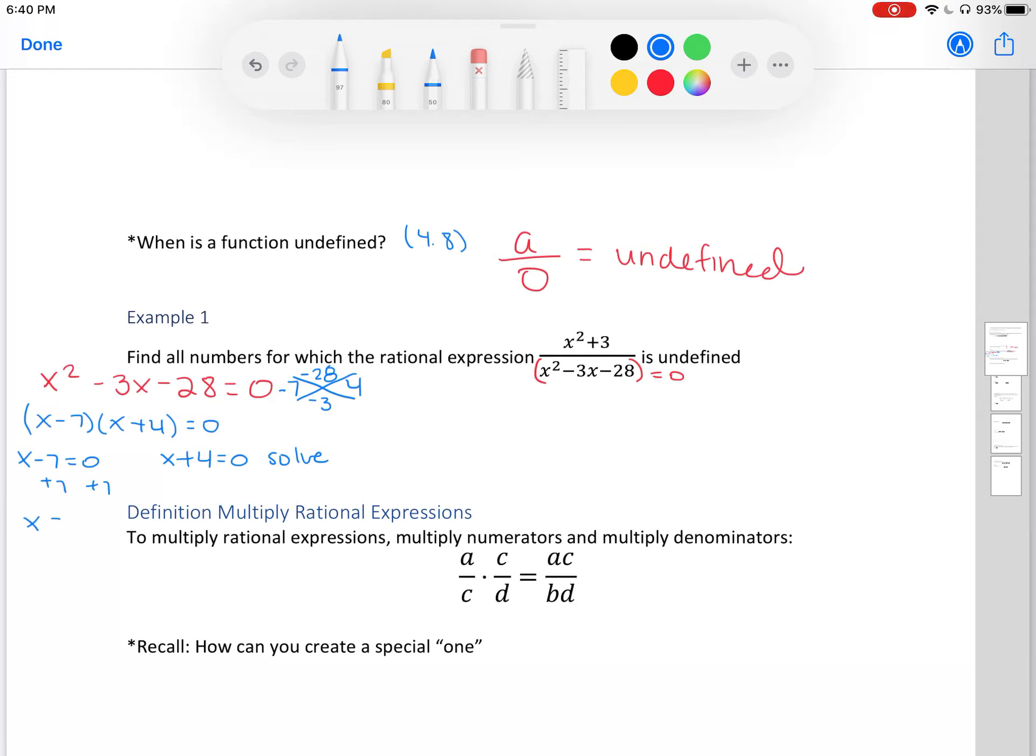Let's go ahead and solve. So if we add 7, we get x is equal to 7. We subtract 4, x is equal to negative 4. And so our function will be undefined where x is equal to those numbers. So x cannot be negative 4 and 7 because otherwise it would be undefined.